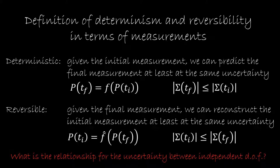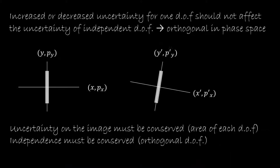Let's start with determinism or reversibility in terms of measurement. A deterministic and reversible process is one where, given a measurement, we can reconstruct either the initial or the final measurement at least at the same level of uncertainty. The question is: how does this uncertainty behave in terms of the independent degrees of freedom? If the independent degrees of freedom are truly independent, we would expect that increasing or decreasing the uncertainty for one degree of freedom would not affect the uncertainty of the other independent degrees of freedom.